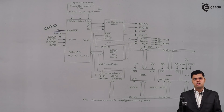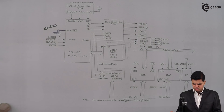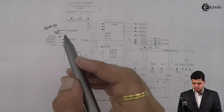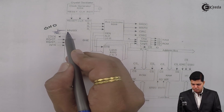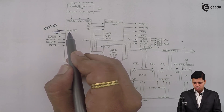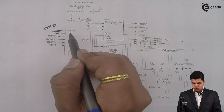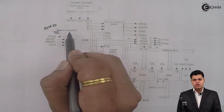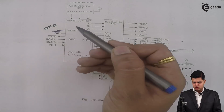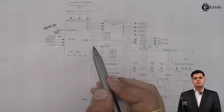First of all we are going to see how the configuration of maximum mode looks. Starting from the first line, MN/MX bar — for selecting the maximum mode of 8086 microprocessor this pin should be grounded. So 0 is connected to the MN/MX bar, which will select the 8086 microprocessor in maximum mode.